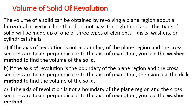Solid of revolution. The volume of a solid can be obtained by revolving a plane region about a horizontal or vertical line that does not pass through the plane. This type of solid will be made up of one of three types of elements: the disk, washers, or cylindrical shells.